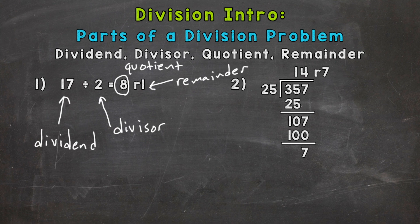All right, let's go to number two here where we have 357 divided by 25. So it's set up as a long division problem. Now I'm going to set it up like number one. It would actually look like this: 357 divided by 25.